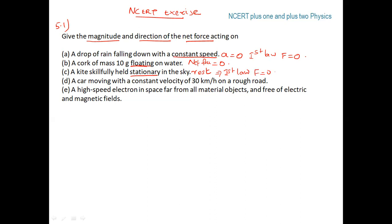A cork moving with constant velocity — constant velocity means acceleration is zero. Therefore F = ma = 0. So acceleration zero means net force is zero.